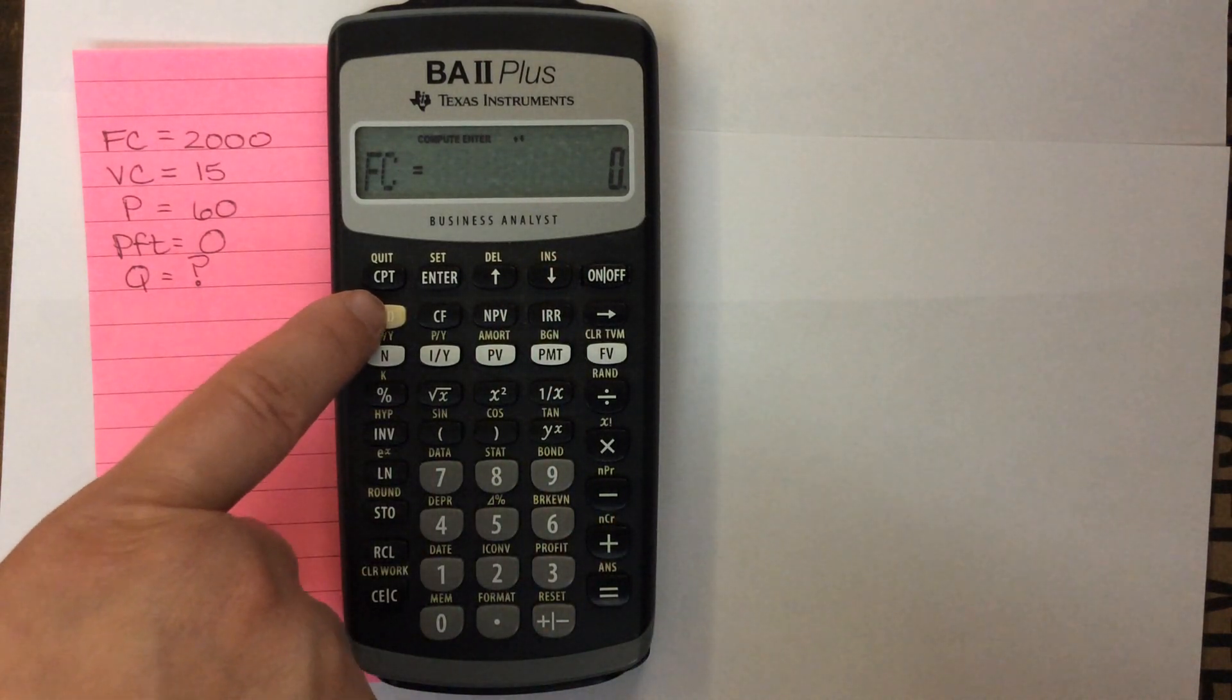If you want to clear all of the values so that you can start from scratch, you're going to hit second function and clear. And that's going to wipe out all of your values so you're starting from scratch. If you want to get back to regular calculator land, second function quit.